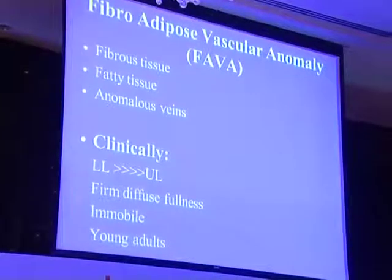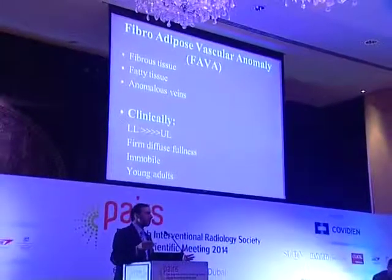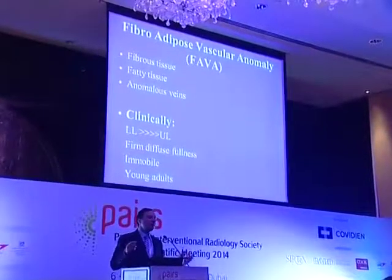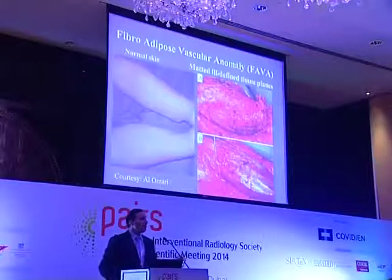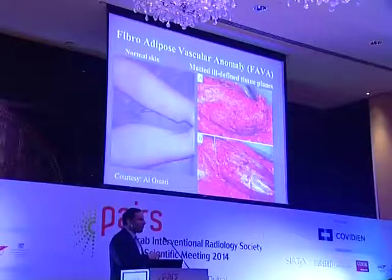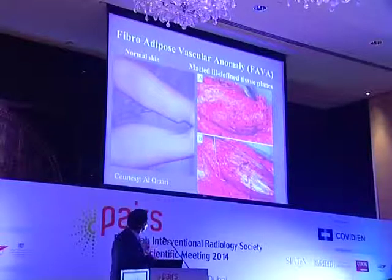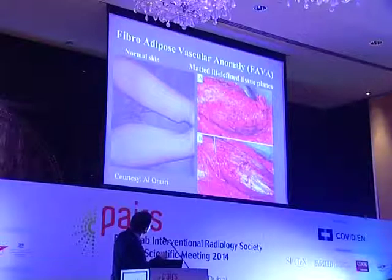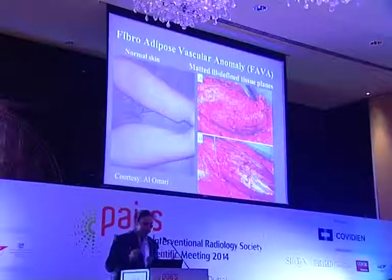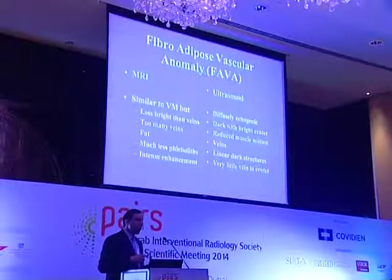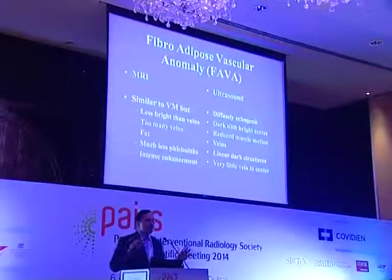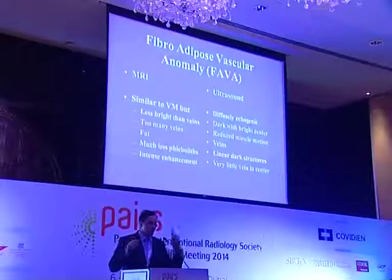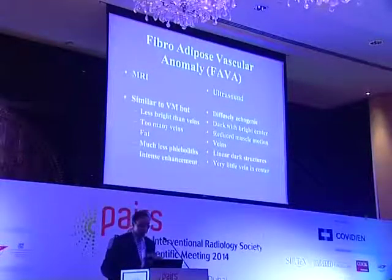Fibro-adipose vascular anomaly (FAVA) looks on imaging very similar to venous malformation, but has an excess of veins and fibrous tissue. Clinically, although it looks like a vascular malformation, when you feel it, it is really hard. Surgically it is a conglomerate of fibrous tissue with fat and veins. On MRI, the differences include too many visible veins, the presence of fat, and a signal that is often bright but not as bright as venous malformation, and it is heterogeneous.